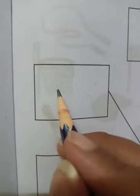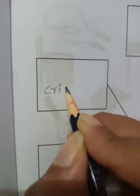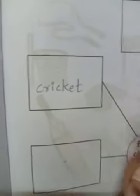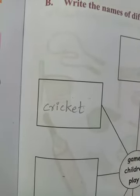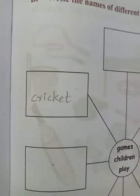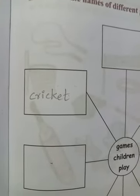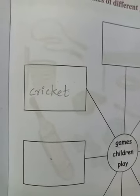We'll start with cricket. The spelling of cricket is C-R-I-C-K-E-T. Write it down. Also, improve your pronunciation - it's 'cricket', not 'cricket' with a flat tone.